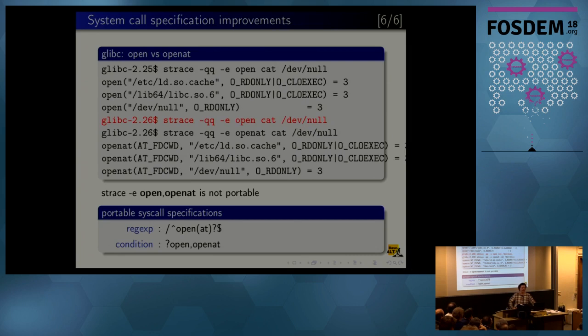Using this conditional specification you can work around this. This is a real case example you will probably see or have seen in the future. Glibc switched from open to openat internally and also for implementing the open library call. So if you used to trace by open it no longer works starting with glibc 2.26. But if you switch to openat you won't be able to trace older glibc, it's not good. So you can use a list but it's not portable because openat is not available on some architectures. So how can you write a portable strace script?